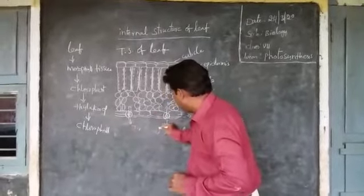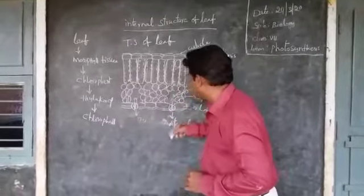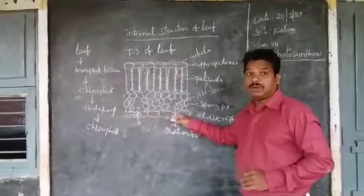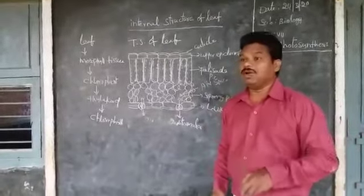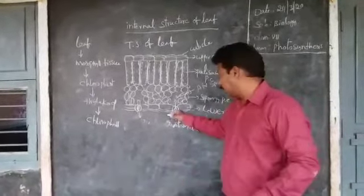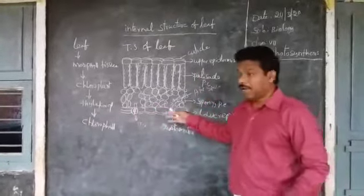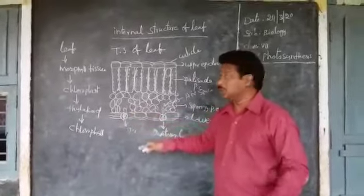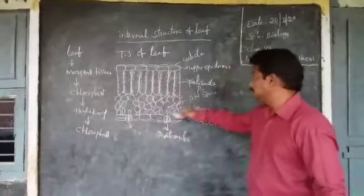The stomata are not only important for gas exchange — they are also important for transpiration. We know about transpiration, we discussed it previously. What is meant by transpiration? Excess water present in the plant can be sent out in the form of vapor through the stomata. For that also, stomata are important. So stomata play an important role in gas exchange as well as in the transpiration process. In that way, the plant can conduct photosynthesis with the help of stomata. This is the cross-section of the leaf.